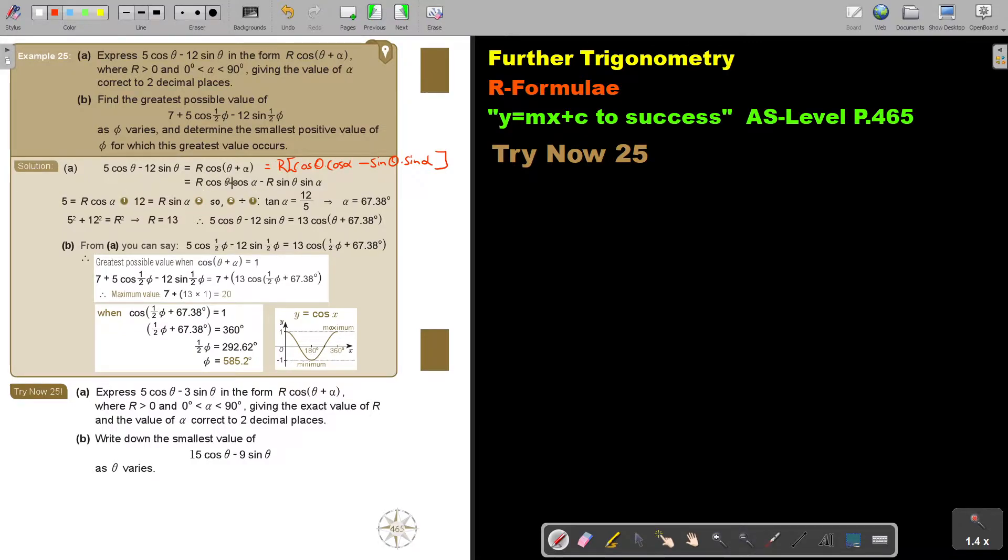Then I form my two equations. I just say 5 equals, I equate, so it's equal to R cos alpha, and then there, 12, not minus, just 12 because the signs are the same, 12 equals R sin alpha.